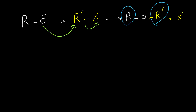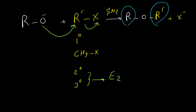By Williamson ether synthesis we can synthesize asymmetric ethers. For performing Williamson ether synthesis we need to use a primary alkyl halide, or we need to use CH3X. If we use secondary or tertiary alkyl halides, instead of getting an SN2 reaction, we will have an elimination reaction.